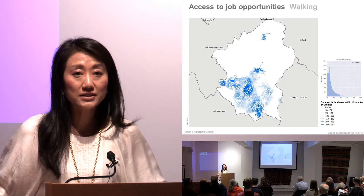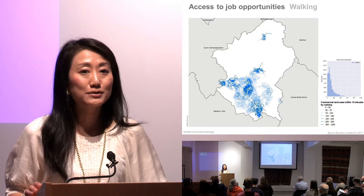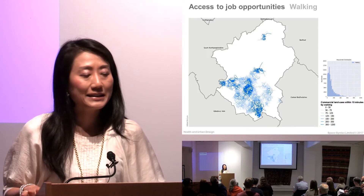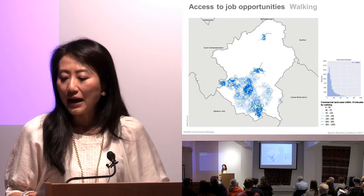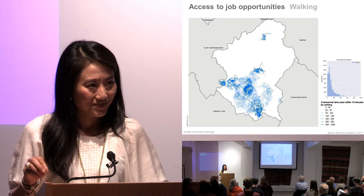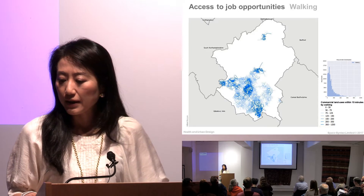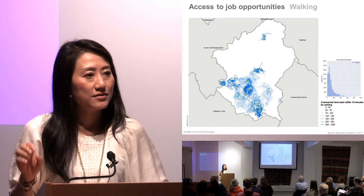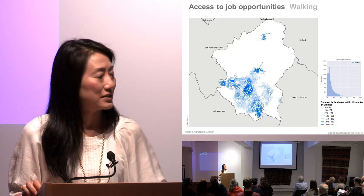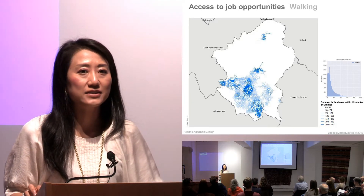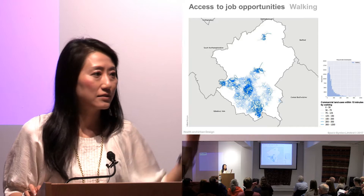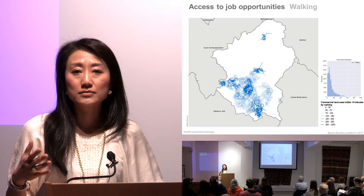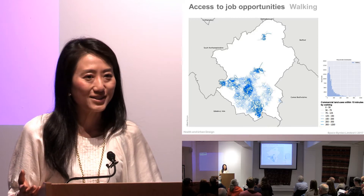This is an example of Milton Keynes. We are looking at the data, primarily spatial network — we assigned speed and looked at the network and calculated the number of job opportunities. What is shown here is that number of job opportunities: the darker the colour, the more opportunities within 15 minutes walking distance.